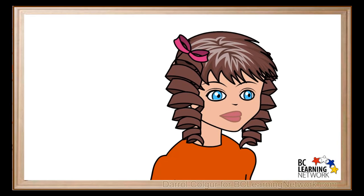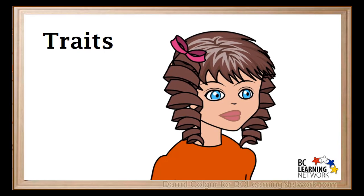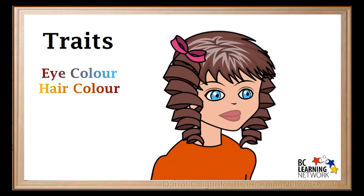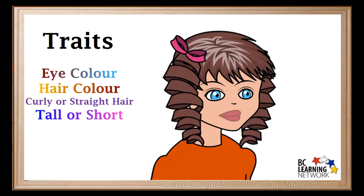Notice this girl's eyes are blue and her hair is dark brown. Characteristics like these are called traits. Traits could be things like eye color and hair color, but they could also mean things like having naturally curly or straight hair, being tall or short, being left-handed or right-handed, and many others.